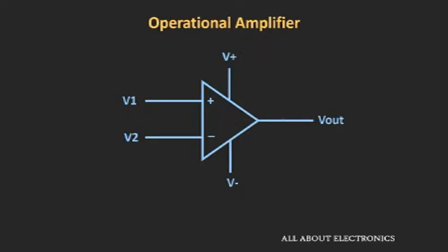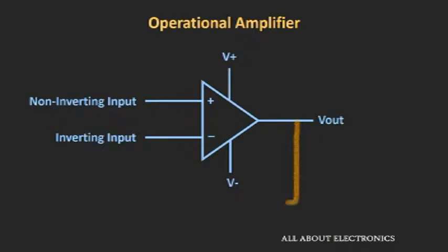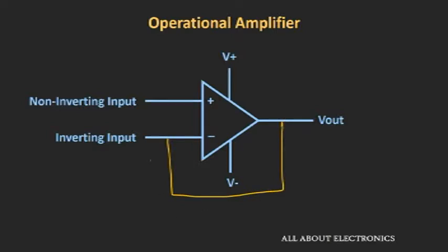We can control the gain by applying feedback from the output to the input. There are two ways: providing feedback from output to the positive non-inverting input terminal, or providing feedback to the inverting input terminal. When feedback goes to the non-inverting input, that is positive feedback, and positive feedback leads a system into instability. So we cannot use positive feedback alone. To control the gain, we need negative feedback — feeding a fraction of the output voltage to the inverting input terminal.